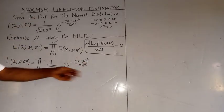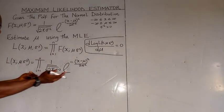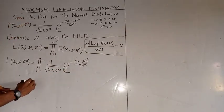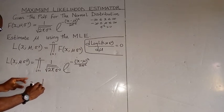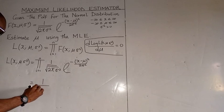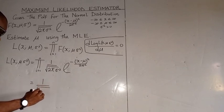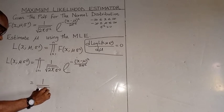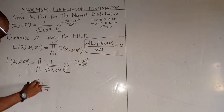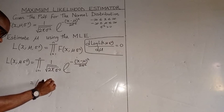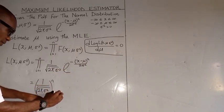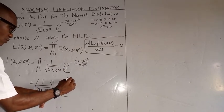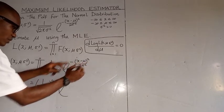The likelihood function is the product of this function. We have one over the square root of 2 pi times sigma squared, raised to the power n, according to the normal distribution density formula.